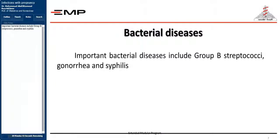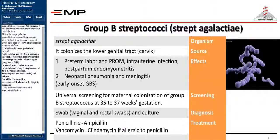Important bacterial diseases include Group B Streptococci, Gonorrhea, and Syphilis. Group B Streptococci are not the Group A beta-hemolytic streptococci that cause upper respiratory tract infections.